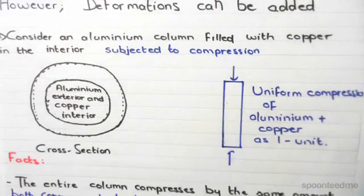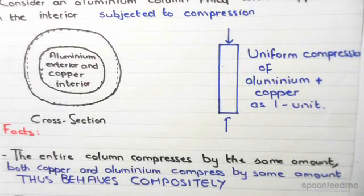So, the entire column compresses by the same amount. Both copper and aluminum compress by the same amount and behave compositely.